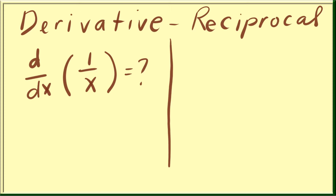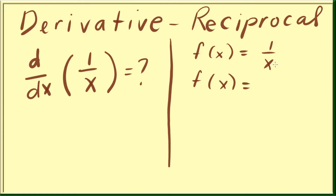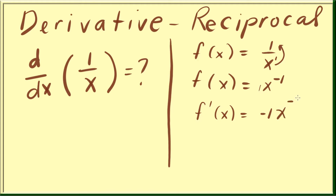Let's say we have to find the derivative of 1 over x. The old way of doing it: we rewrite this so that x is in the numerator using the property of exponents. The exponent of x is 1, so when you move it up, it turns into negative 1. Now we can use the power rule. So we get negative 1 times x, raised to negative 2 (negative 1 minus 1).